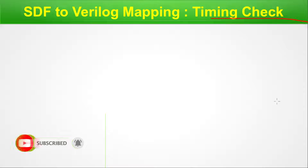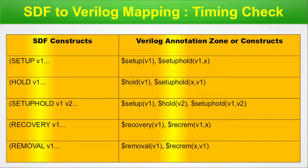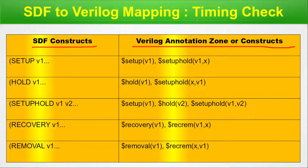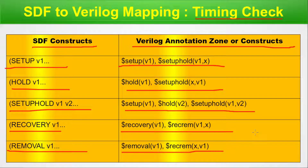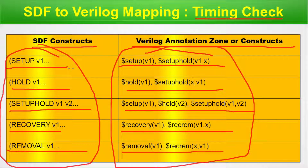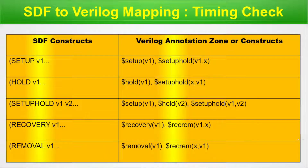Now we look at SDF to Verilog mapping for timing check constructs. This mapping is more straightforward than the delay mapping. SETUP maps to the $setup system task, HOLD maps to $hold, SETUPHOLD maps to $setuphold, RECOVERY maps to $recovery, and REMOVAL maps to $removal. These predefined Verilog system tasks are used for mapping, and the values declared within those constructs will be back annotated through them.